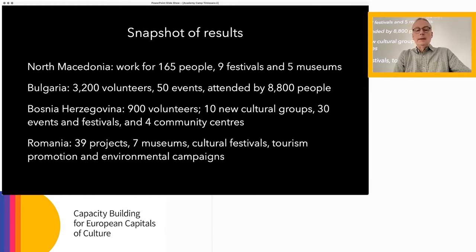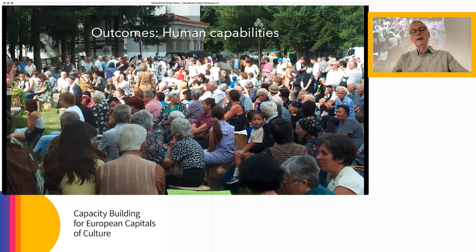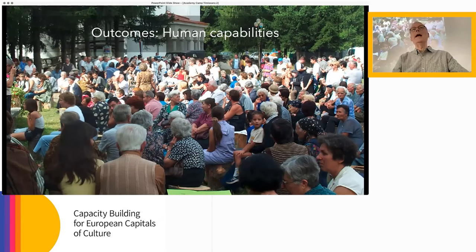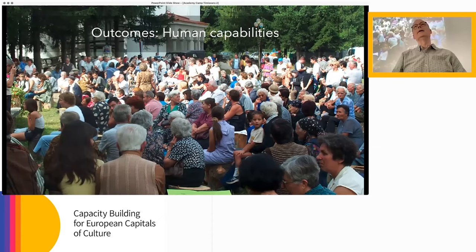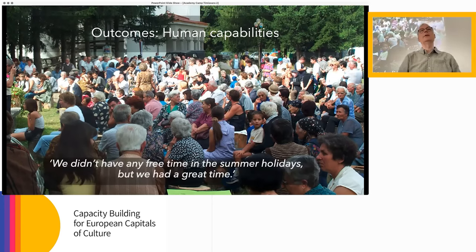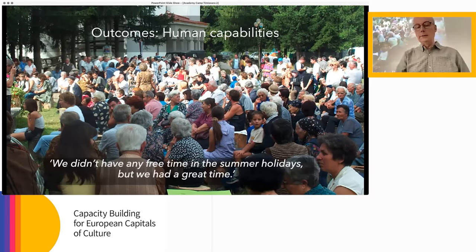Some outcomes. In terms of human capabilities — the skills and capacities we have to do things — there was an extraordinary event in Bulgaria where a project about the genealogy of the village traced everybody who had ever lived there, made huge family trees pinned on trees and boards, and invited everyone back. Eight hundred people came back to the village and were fed. A kid I talked to said: 'We didn't have any free time in the summer holidays, but we had a great time.' They learned so much doing this together.